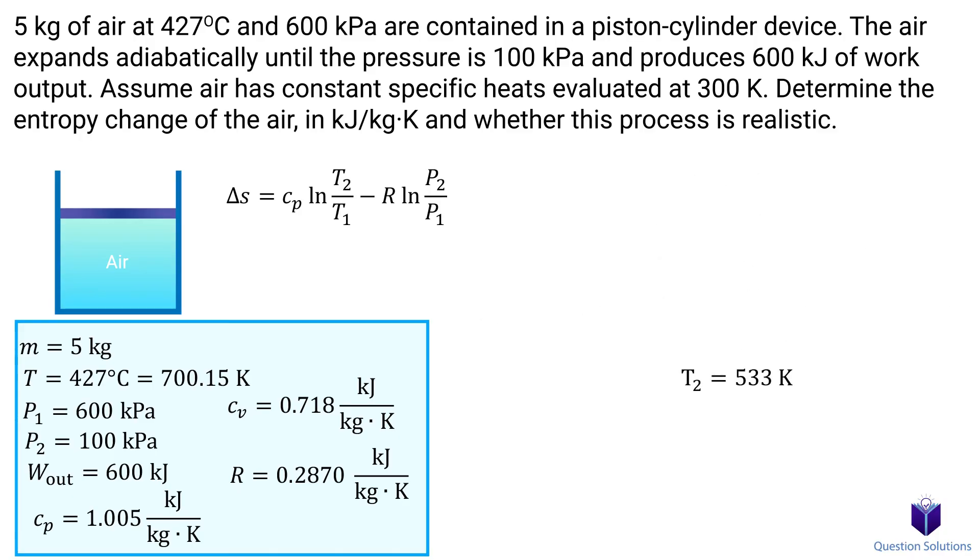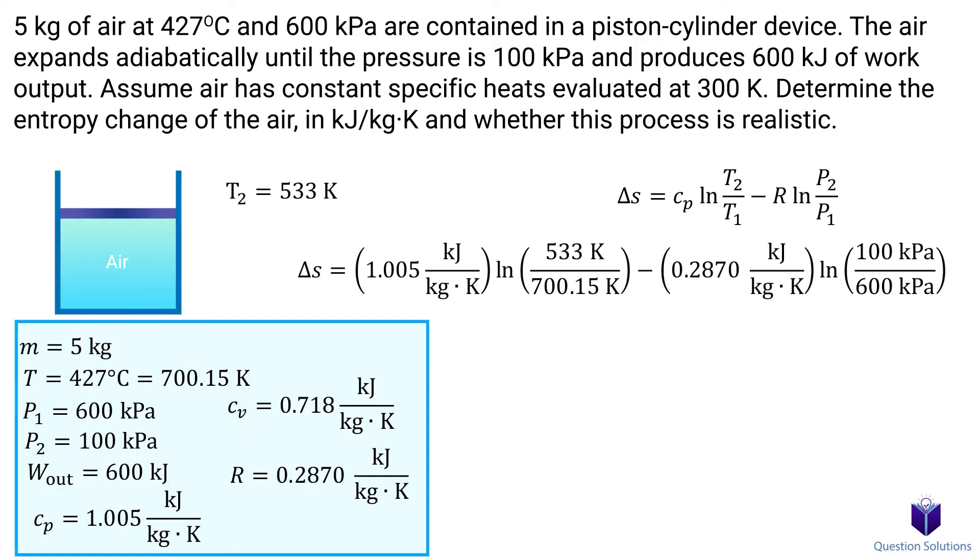Now we can plug in our values and solve for T2. The next step is to plug in the temperature value we just found and all the other values back into our entropy equation. Let's solve and that gives us our entropy value. To answer the last part, which is to say whether this is realistic or not, since we got a positive change for entropy in this adiabatic process, that means it's an irreversible process and realistic.